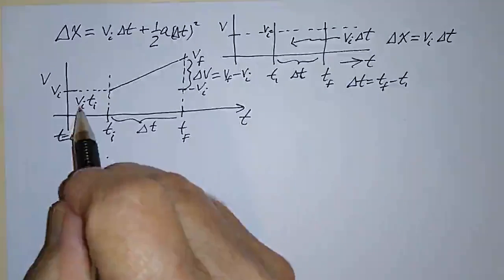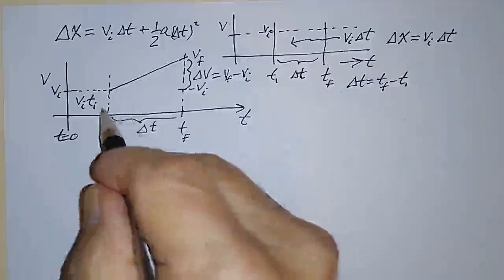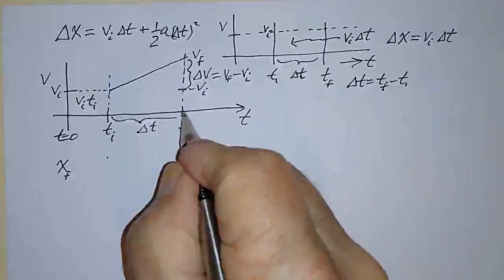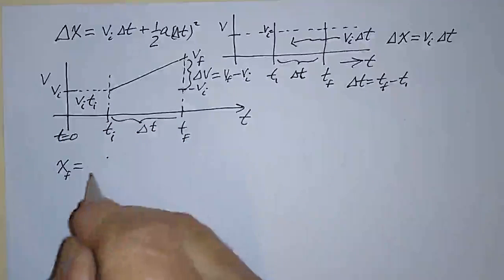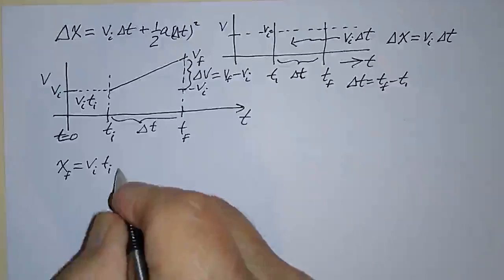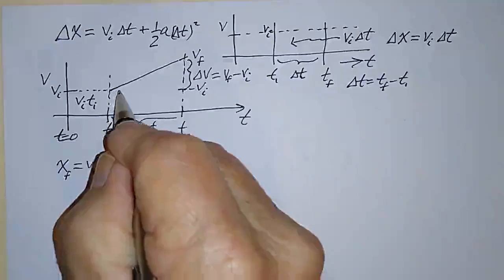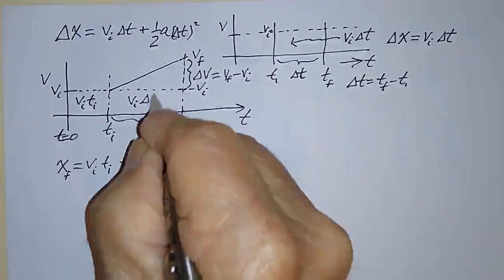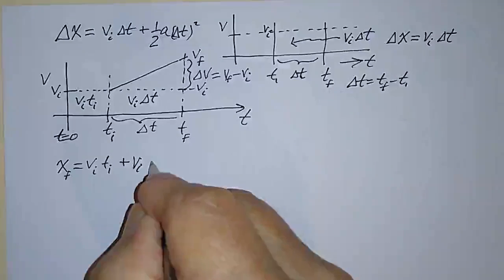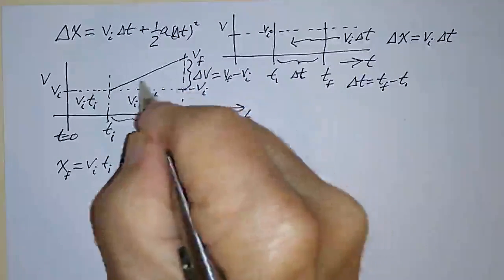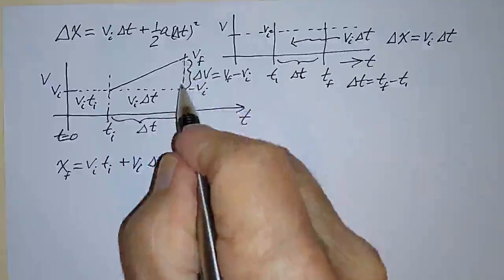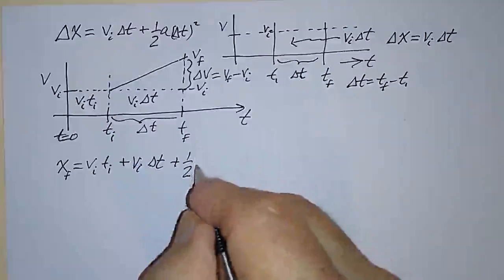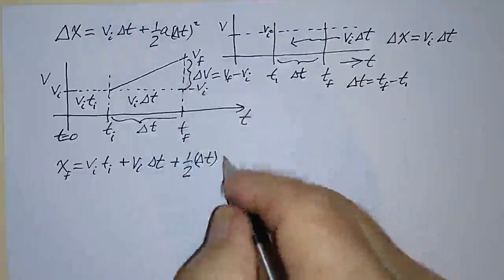The total distance traveled is the area under the full curve. From t initial to t final, part of the area is the rectangle, which is v initial times delta t. The remaining part is the triangular area above the rectangle, equal to one-half times the base times the height — that is, one-half times delta t times delta v.